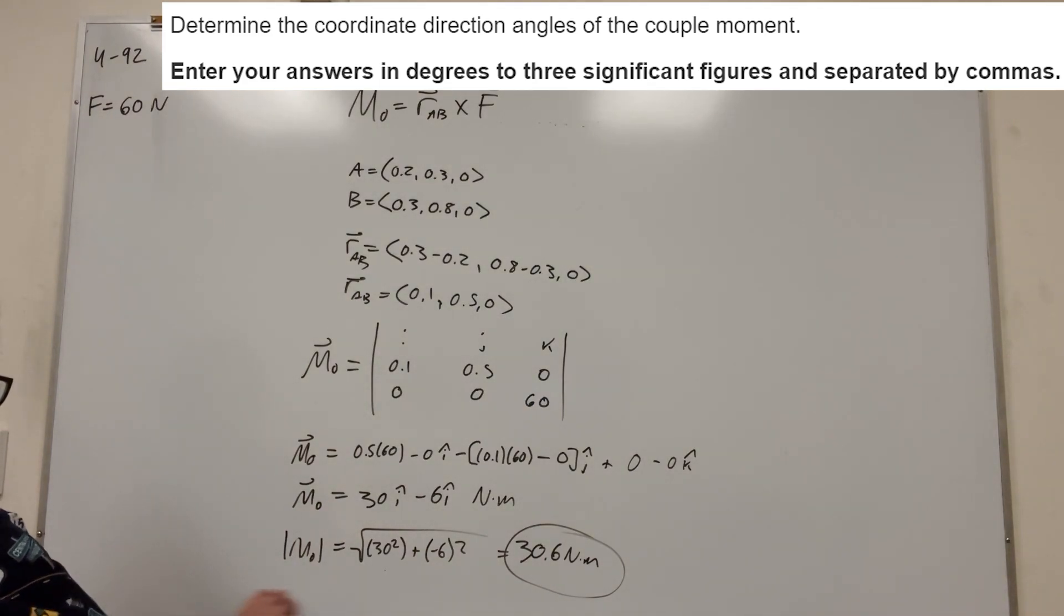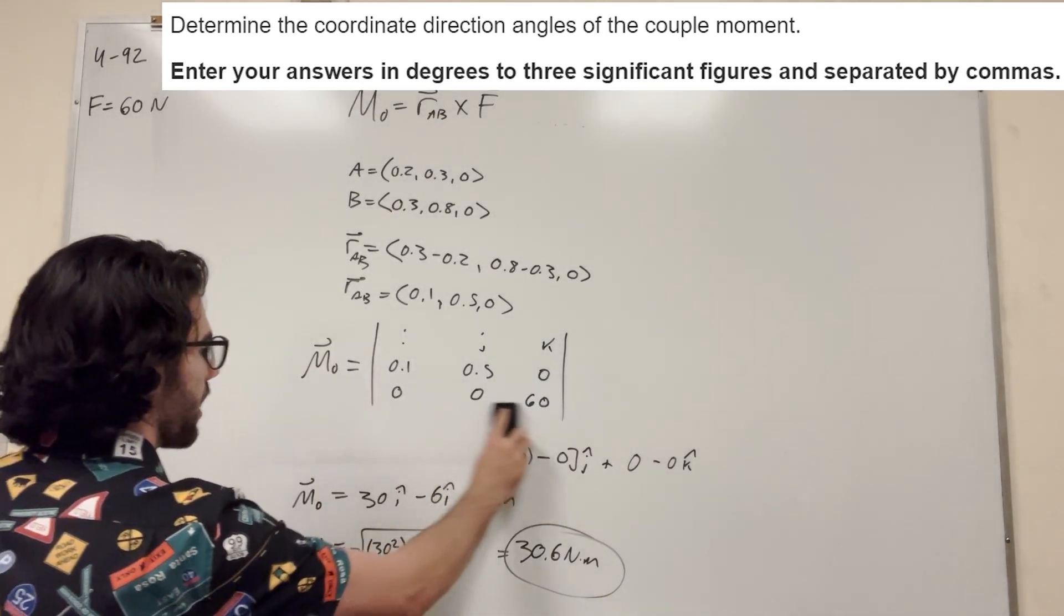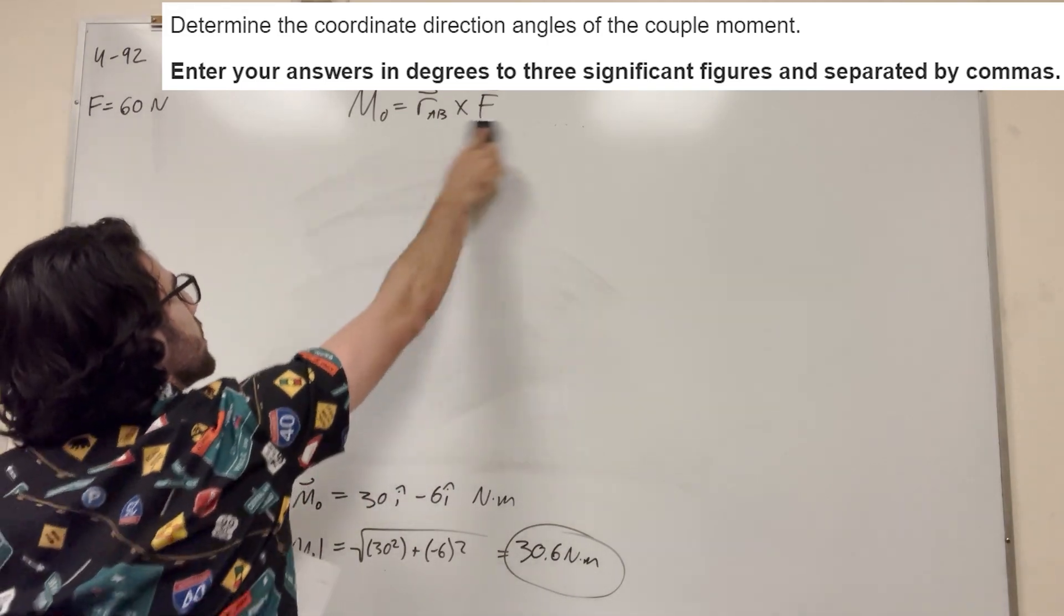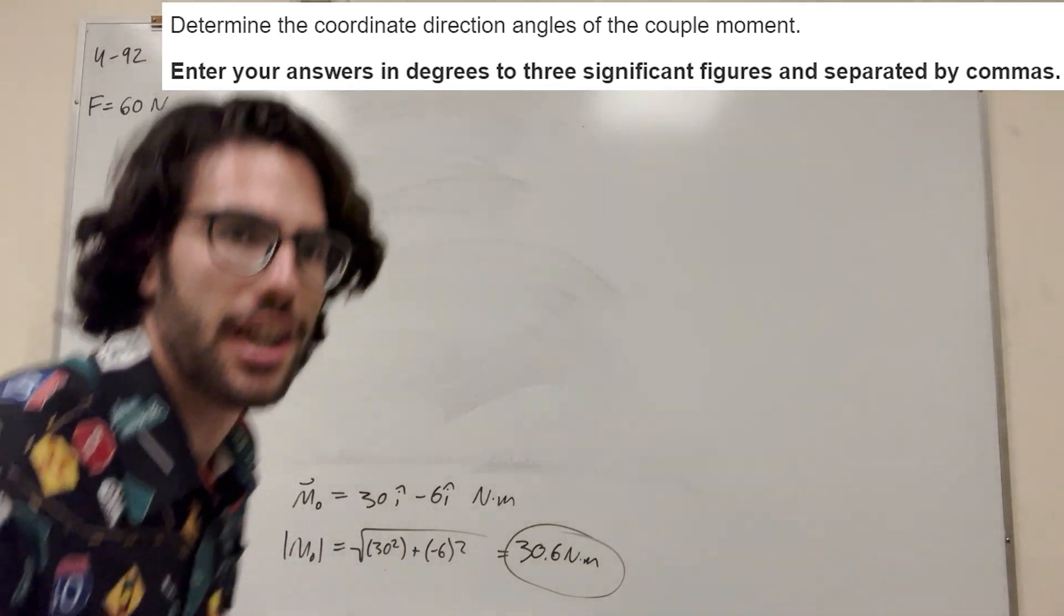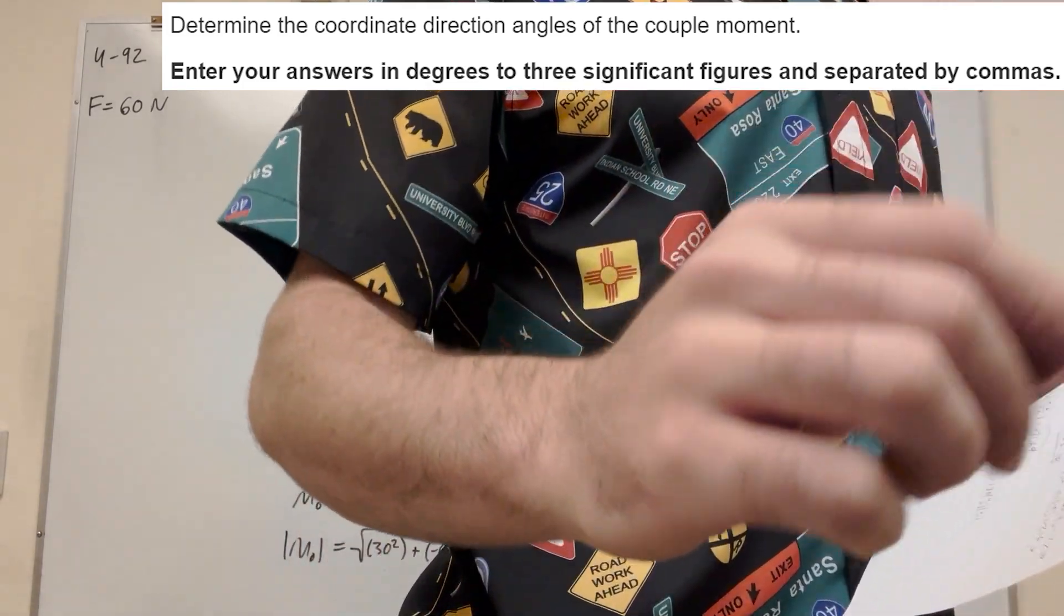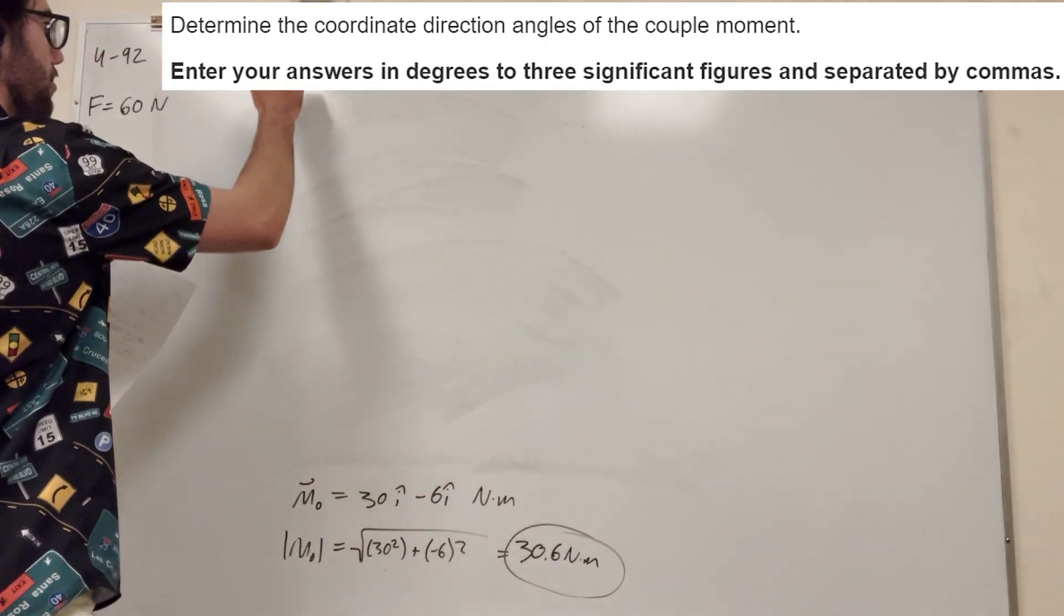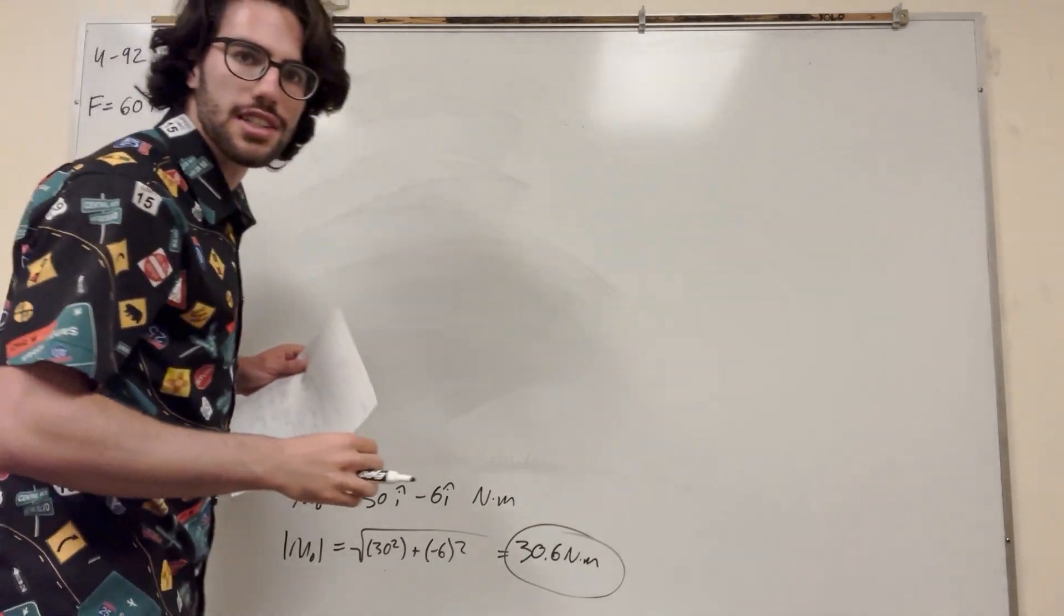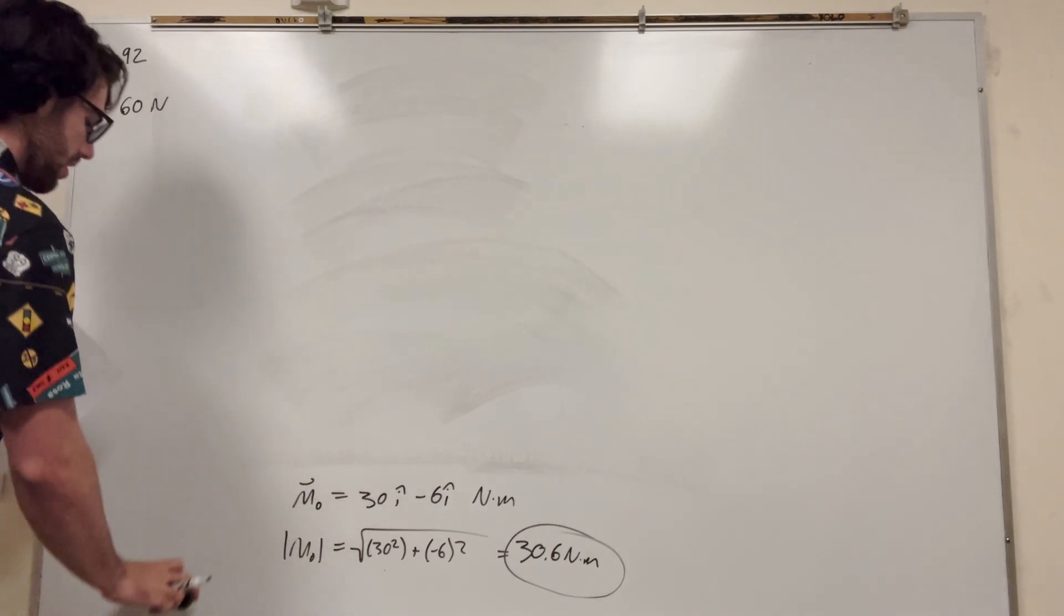Nice. So then part B wants us to find our coordinate direction angles. So we can go ahead and get rid of all of this. We just need these two things at the bottom to find our direction angles. Nice. So what do we know about our coordinate direction angles? Or let's see, what is it exactly asking for? Coordinate direction angles of the couple moment. So coordinate direction angles, alpha, beta, gamma. So alpha. So we did like cosine of alpha. This is in the glare, isn't it? Yeah, you guys can't even see that.